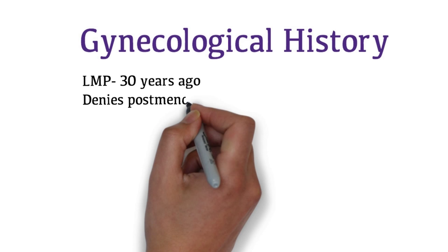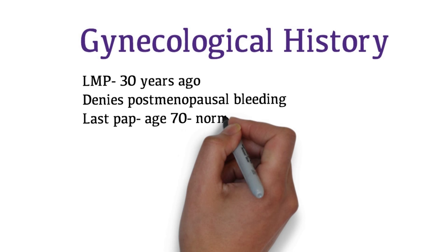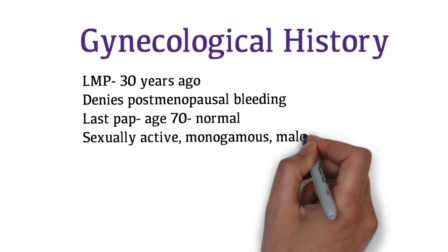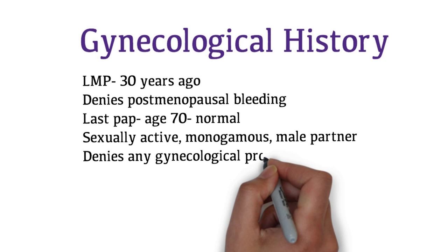Her last menstrual period was 30 years ago. She denies any postmenopausal bleeding. Her paps have been regular. Her last pap was at the age of 70 and she has never had any abnormal paps. She is sexually active and in a monogamous relationship with a male partner. She denies any previous history of gynecological problems or pelvic surgeries.